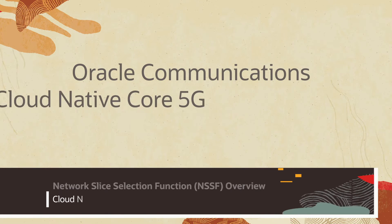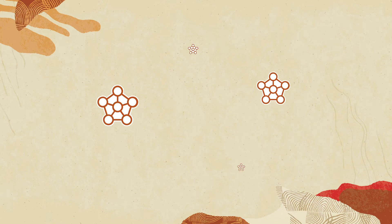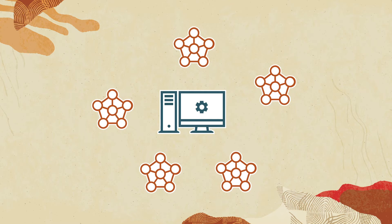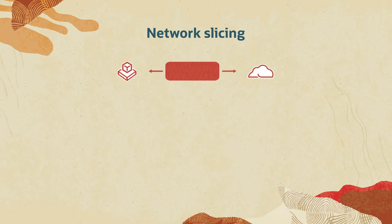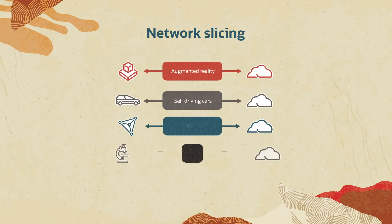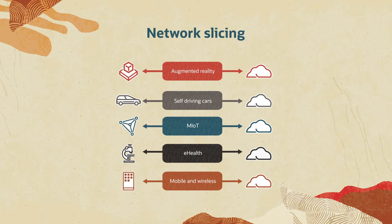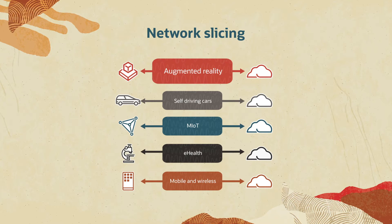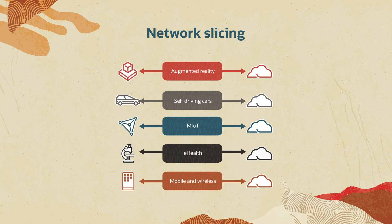Oracle Communications Cloud Native Core 5G provides network slicing to help service providers build multiple virtual networks on a shared infrastructure to meet and exceed the emerging requirements from a wide range of users. With network slicing, you can deploy applications and services flexibly and quickly to accommodate specific requirements of diverse services, like augmented reality, self-driving cars, MIOT, eHealth, and others.